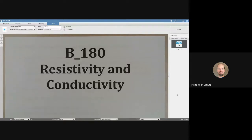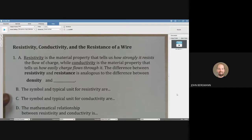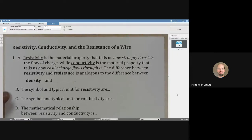Resistivity and conductivity. Resistivity is the material property that tells us how strongly it resists the flow of charge, while conductivity is the material property that tells us how easily charge flows through it.